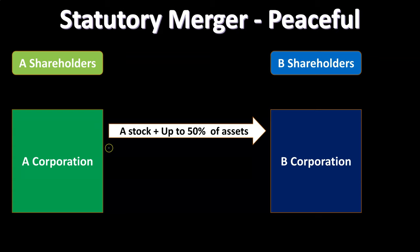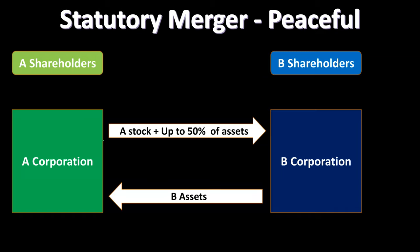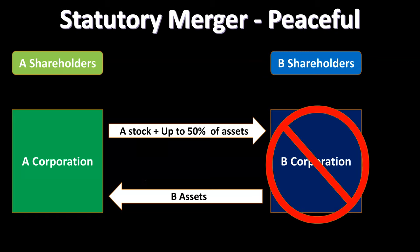In this situation, A provides some consideration — A stock plus up to 50% of the assets — purchasing from B, and B gives its assets in exchange for consideration, which could be stock, cash, or some other form. A is essentially the purchaser here, buying out all the valuable assets of B. B then becomes a shell company, with its valuable assets removed.